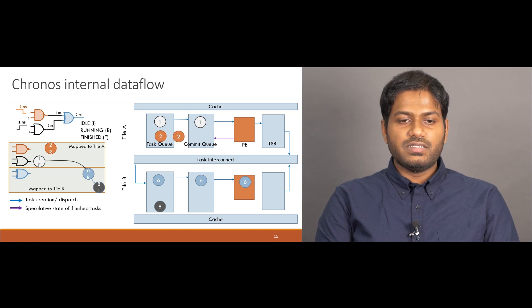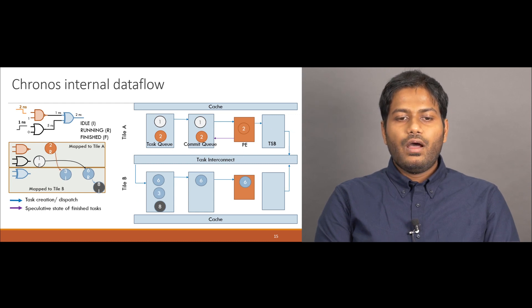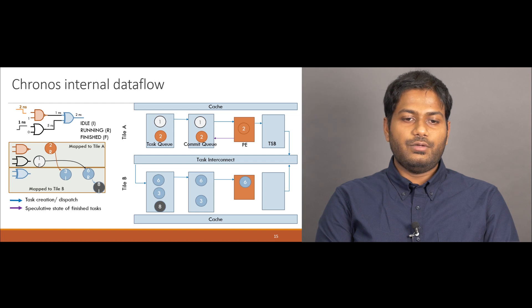However, before task 3 can run, it must perform conflict detection with other tasks in the commit queue. Two tasks will conflict if both of them have the same object ID, and one of them have a higher timestamp than the other. In this case, task 6 must be aborted to make way for task 3.